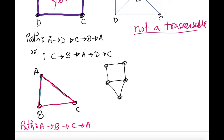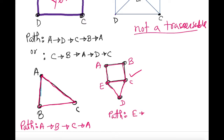Let me check this next one. I'll label the vertices A, B, C, D, E. Starting here and going down — yes! The path is E to D, D to C, C to E, E to A, E to B, B to C. So this one is traversable.